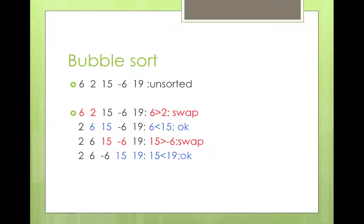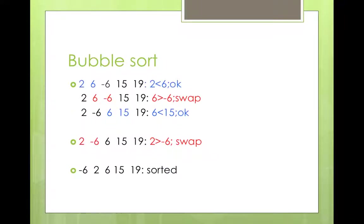Let's discuss an example of sorting using bubble sort. We have an unsorted array with elements: 6, 2, 15, -6, and 19. In one pass we compare adjacent elements — 6 and 2: since 6 is greater than 2 we swap them. Then we compare 6 and 15: 6 is less than 15, so that's fine. Then 15 and -6: we swap because 15 is greater than -6. Then 15 and 19: that's okay. So that completes one pass.